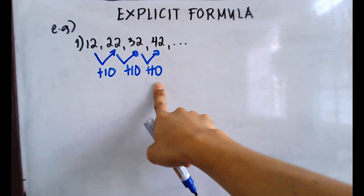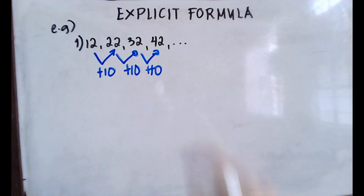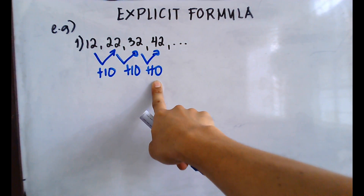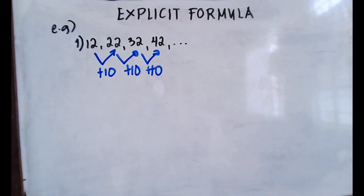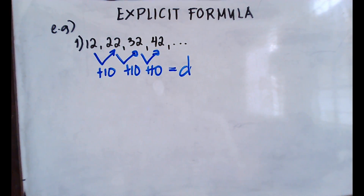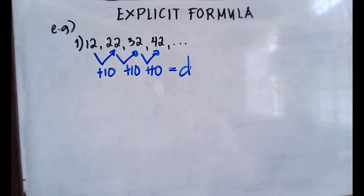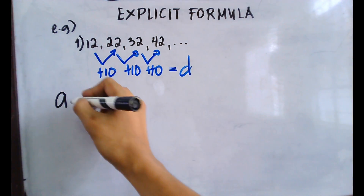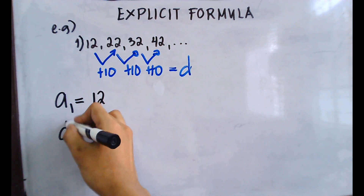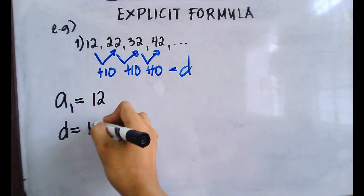There is a constant number being added to each term of the sequence, therefore this is an arithmetic sequence. This constant amount added to each term is called the common difference, or d. So we have a first term of 12 and a common difference of 10.